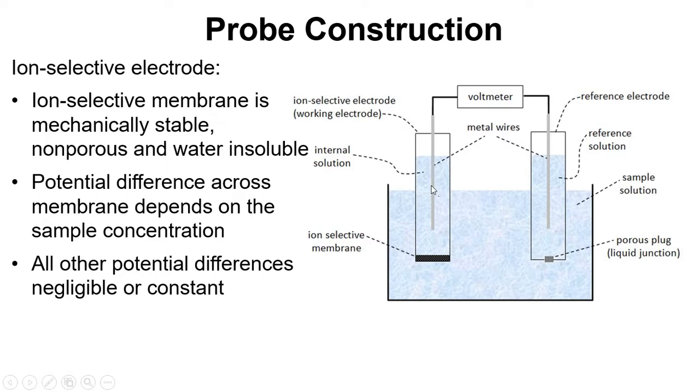So the potential difference between this wire and the solution is designed to be constant. So we set up the experiment so that this is just a fixed value. As is the potential difference between the wire for the reference electrode and the reference solution. So that's just a fixed potential difference. And we set up and design the experiment so that the potential difference here for this liquid junction is negligible.